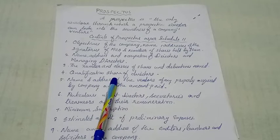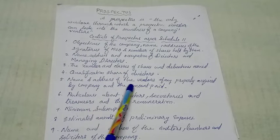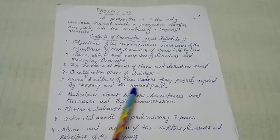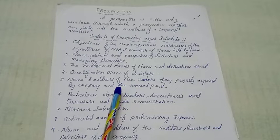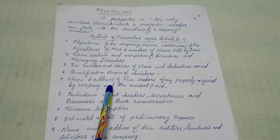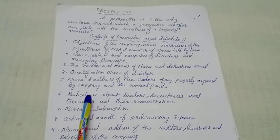Name and address of the vendors of any property acquired by the company, and the amount paid. You can see the details — name and address of the vendors, the property, and the amount paid.